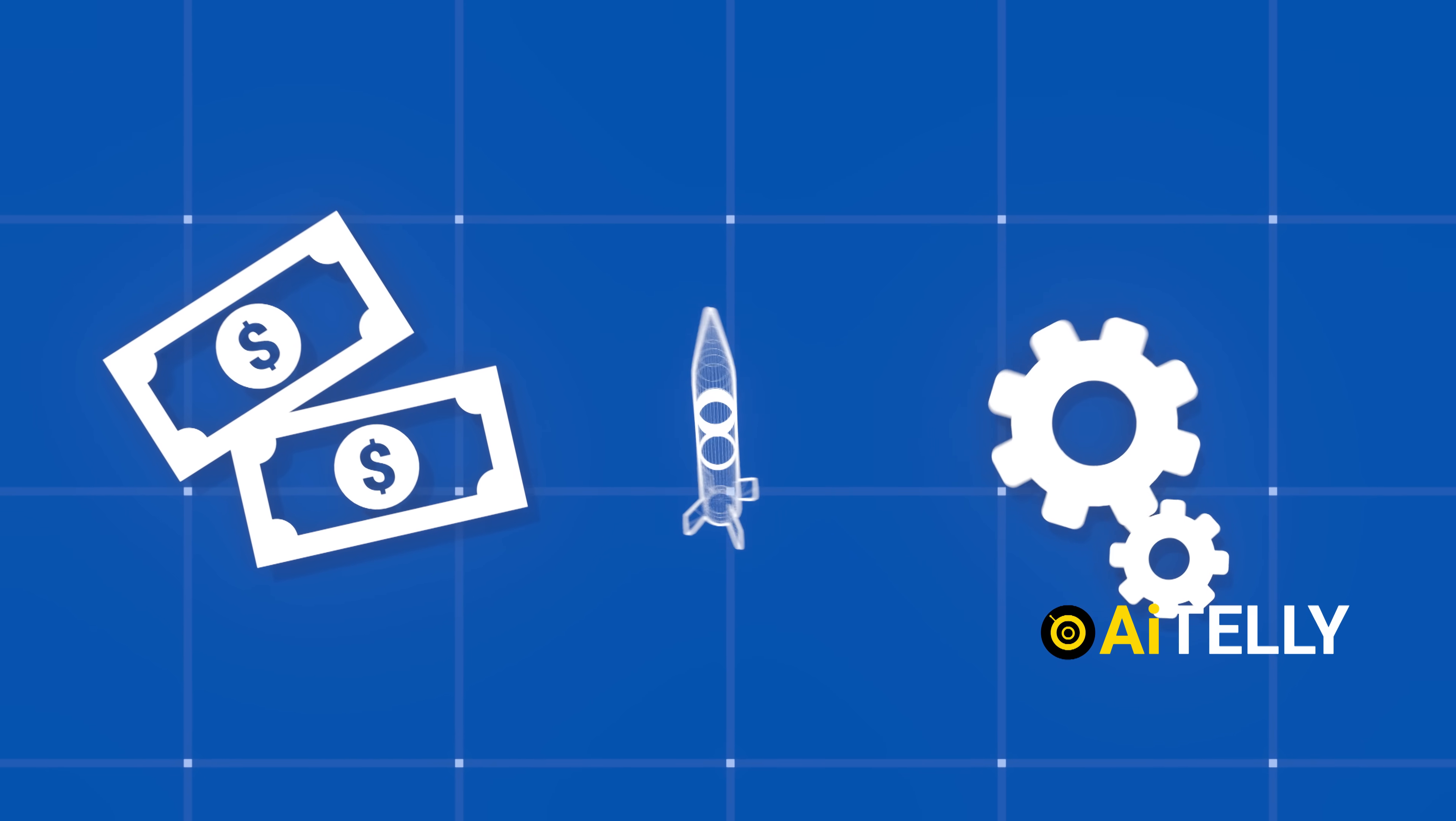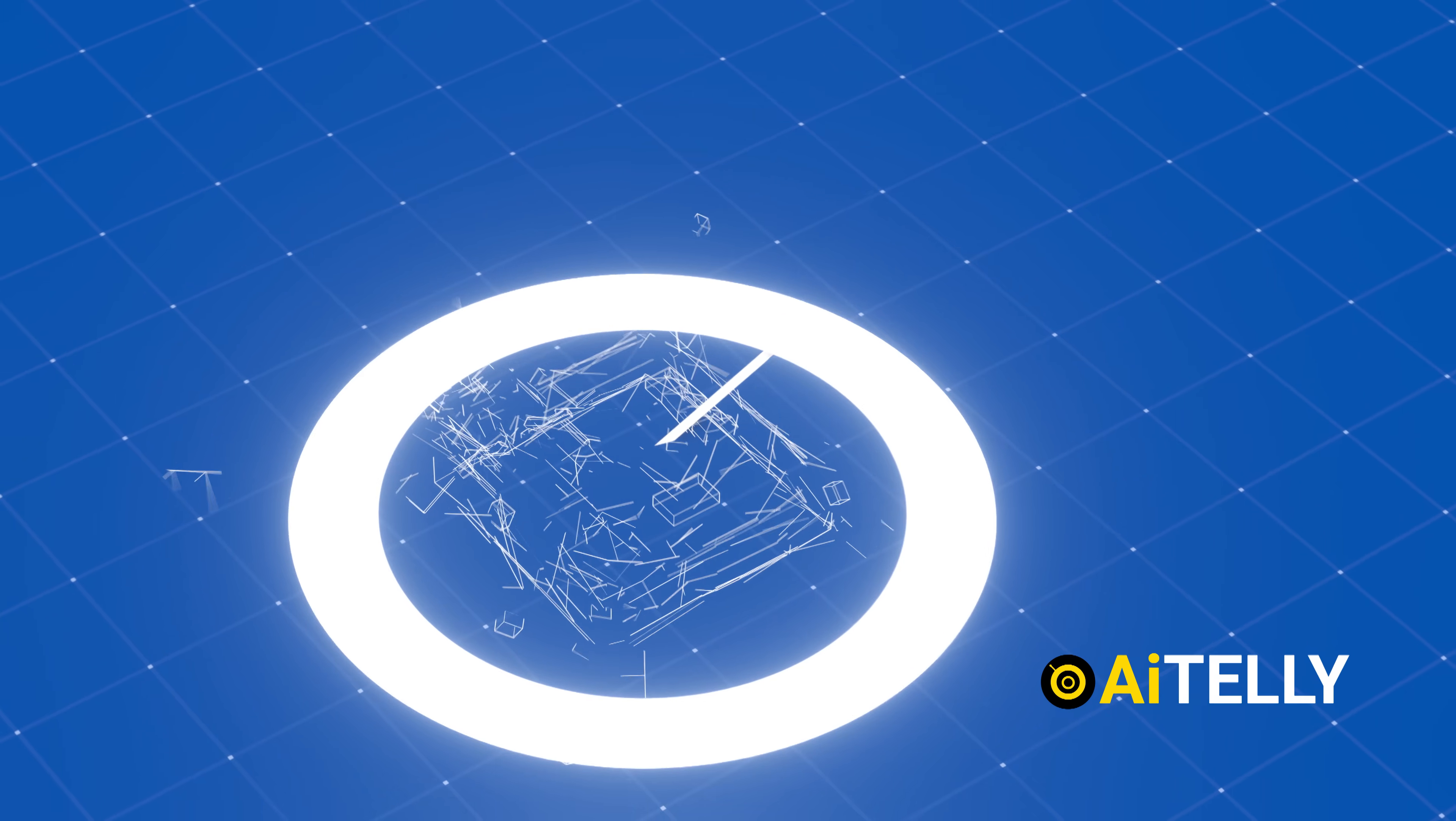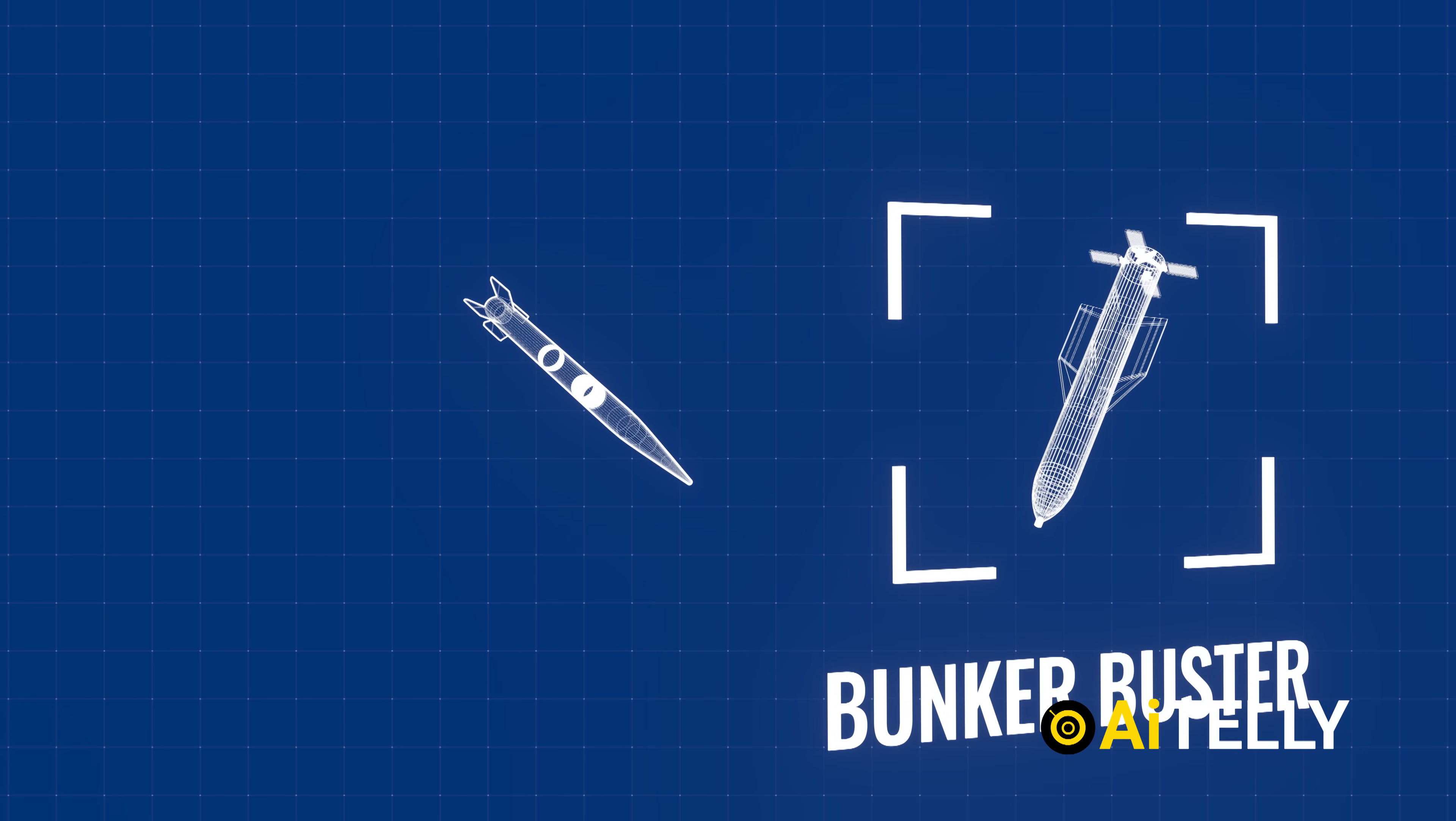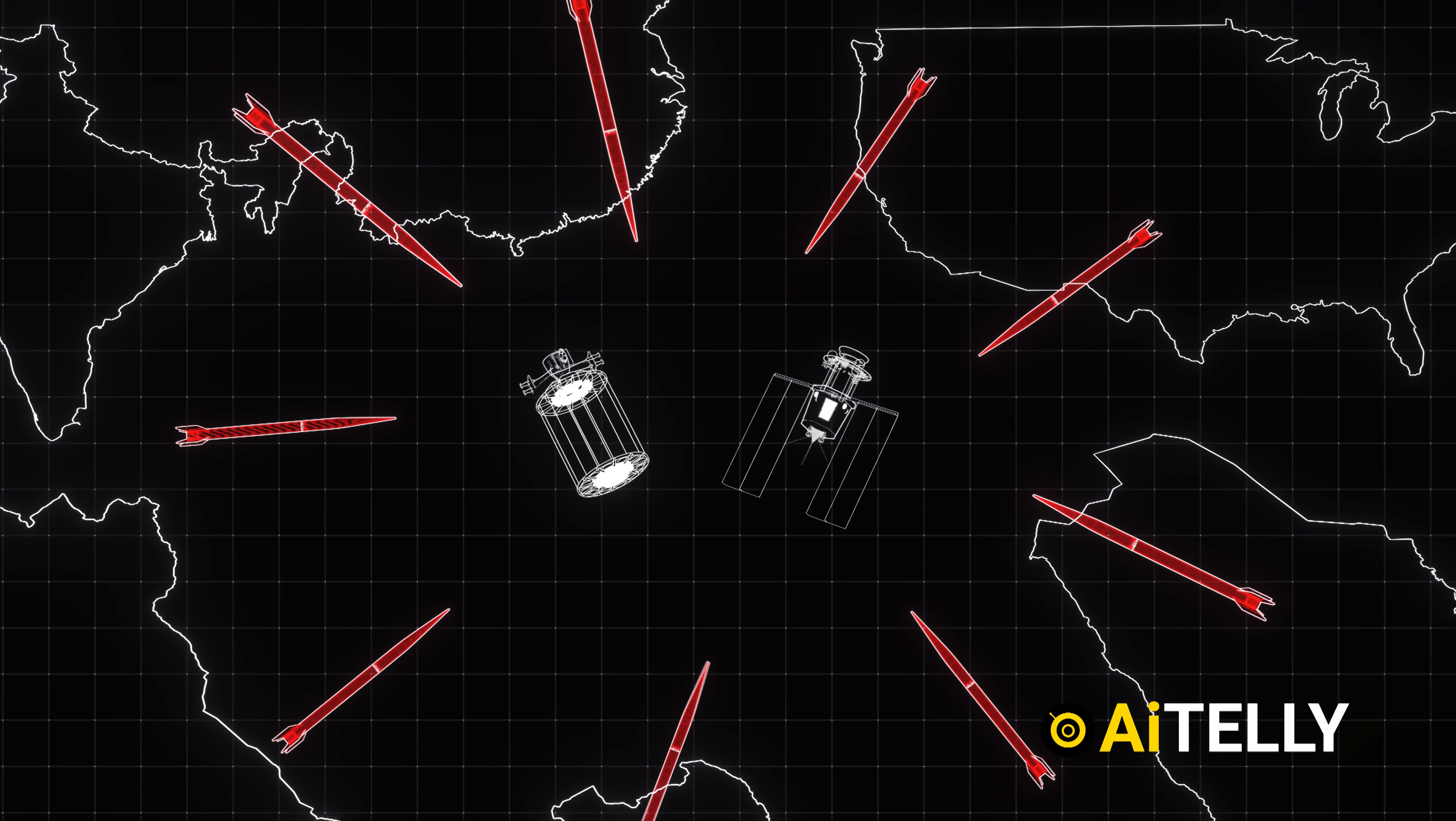Despite the appeal of such weapons, financial and technical challenges are significant. Imagine a tungsten rod the size of a telephone pole—20 feet long and a foot in diameter—striking a hardened bunker at 10 times the speed of sound. The destructive potential is enormous, but so is the cost. Each rod would weigh over 10,000 kilograms and could cost upwards of $300 million to deploy, making it far more expensive than traditional bunker-busting bombs or even nuclear alternatives. The deployment of such weapons could also spark an arms race in space, as rival nations might be tempted to respond with similar capabilities.